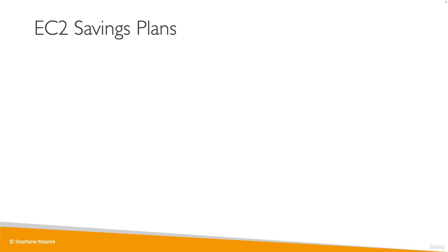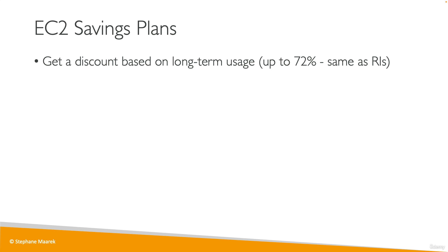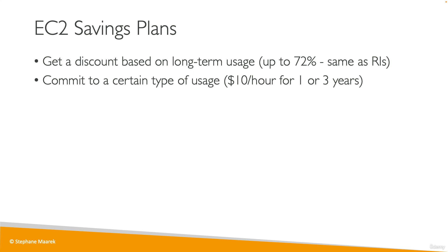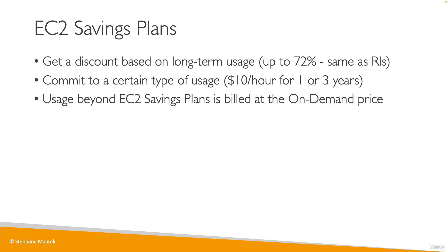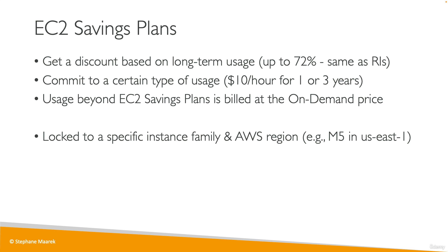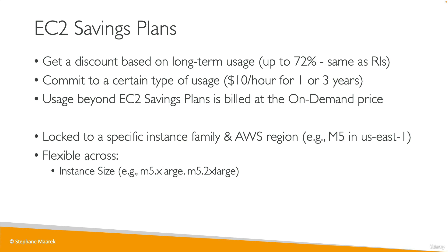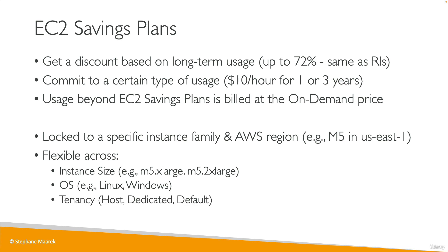Now you have the EC2 savings plan, which allows you to get a discount based on long-term usage — the same 70% as reserved instances. But instead, you're going to say 'I want to spend $10 per hour for the next one to three years,' and any usage beyond the savings plan is billed at the on-demand price. With savings plans, you're locked to a specific instance family and region — for example, M5 type in US East 1 — but you're flexible across the instance size, such as M5 xlarge or M5 2xlarge, the OS (you can switch between Linux and Windows), and the tenancy (you can switch between host, dedicated, and default).